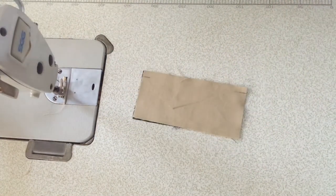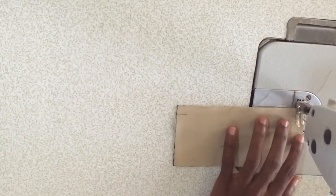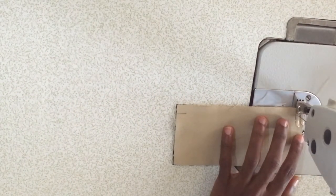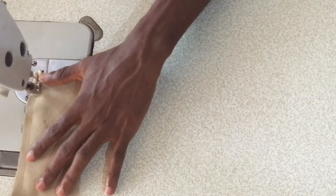Put the two parts of the flap together, right sides facing each other. Begin your stitch one centimeter from the top of the flap. Pivot and end one centimeter before the top of the flap.